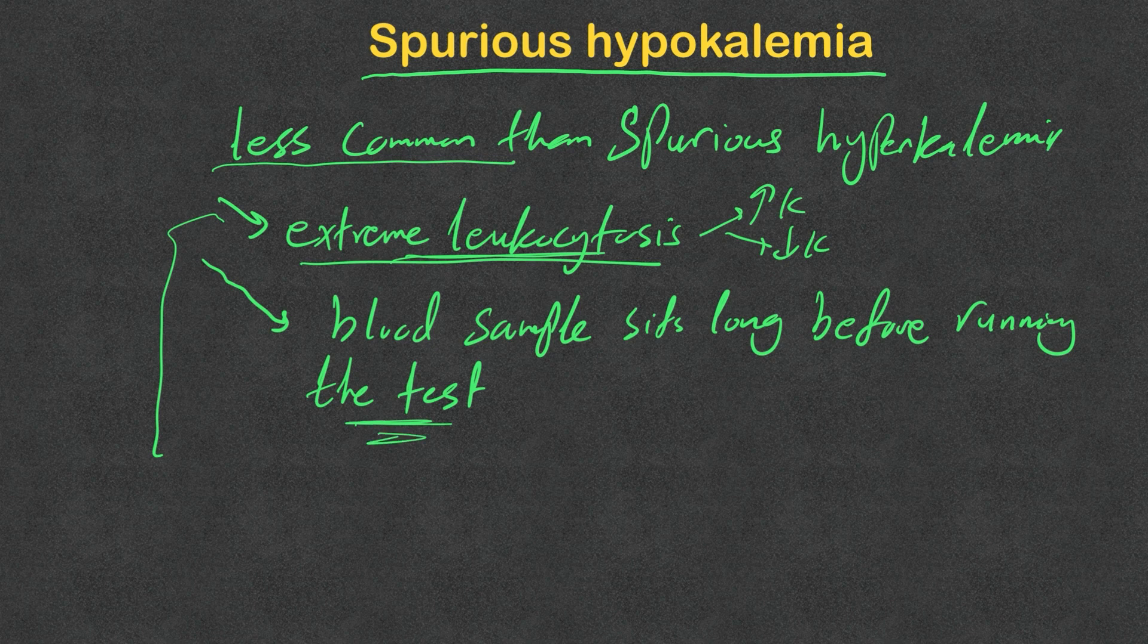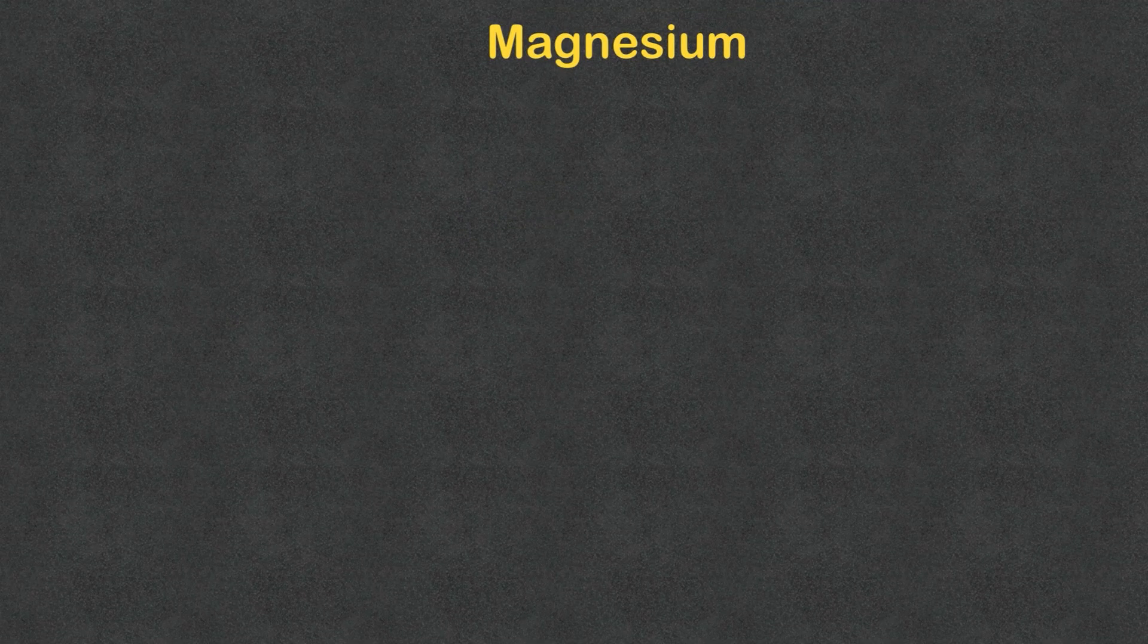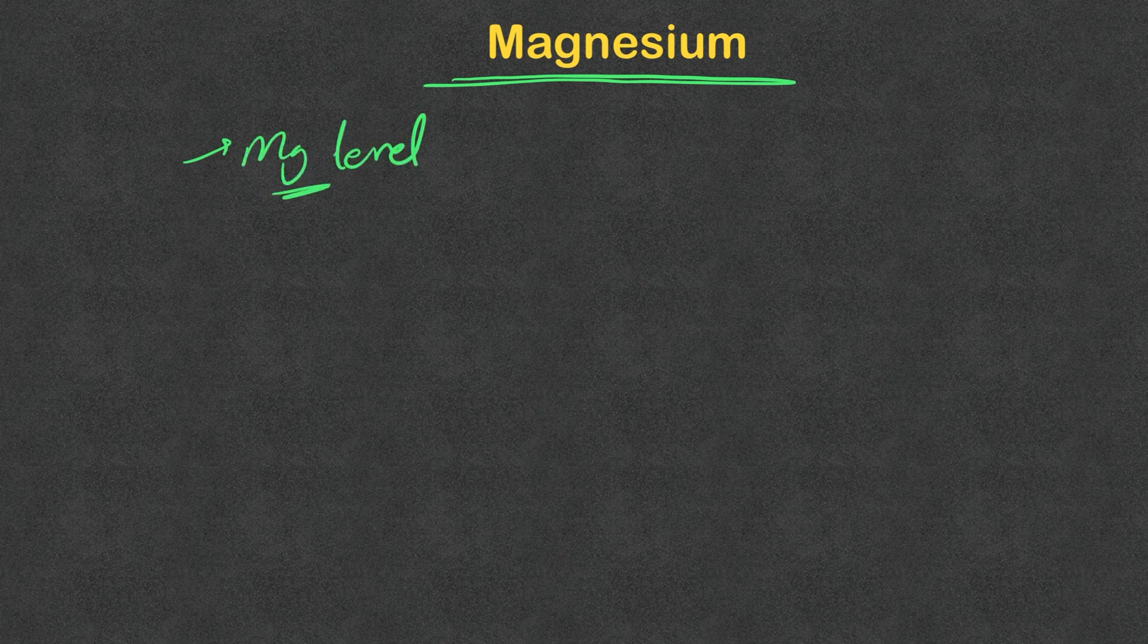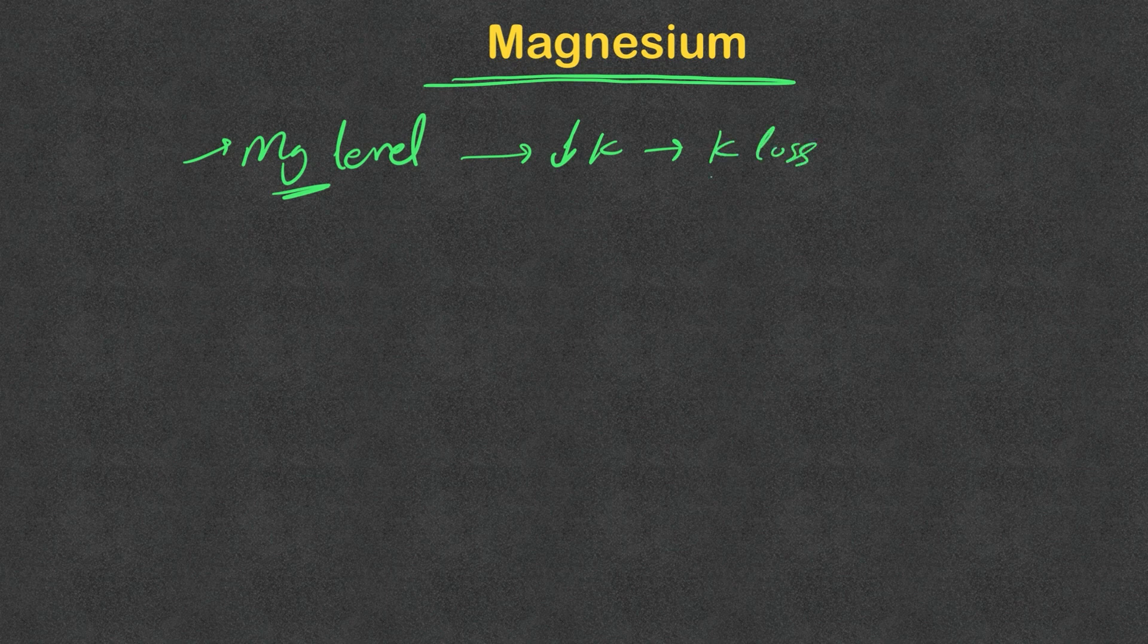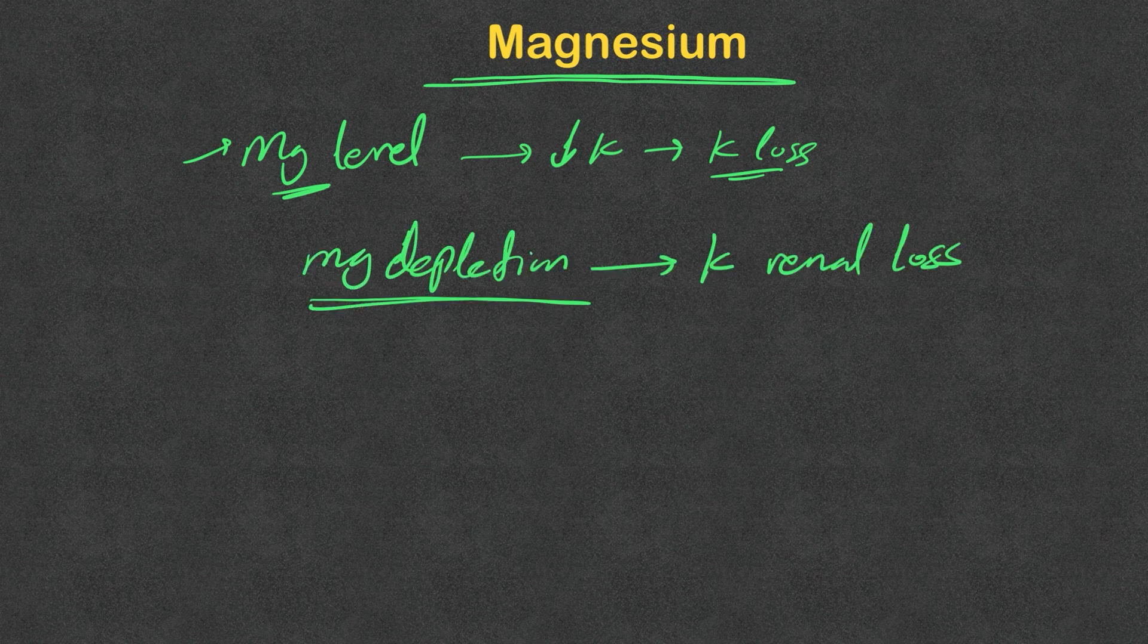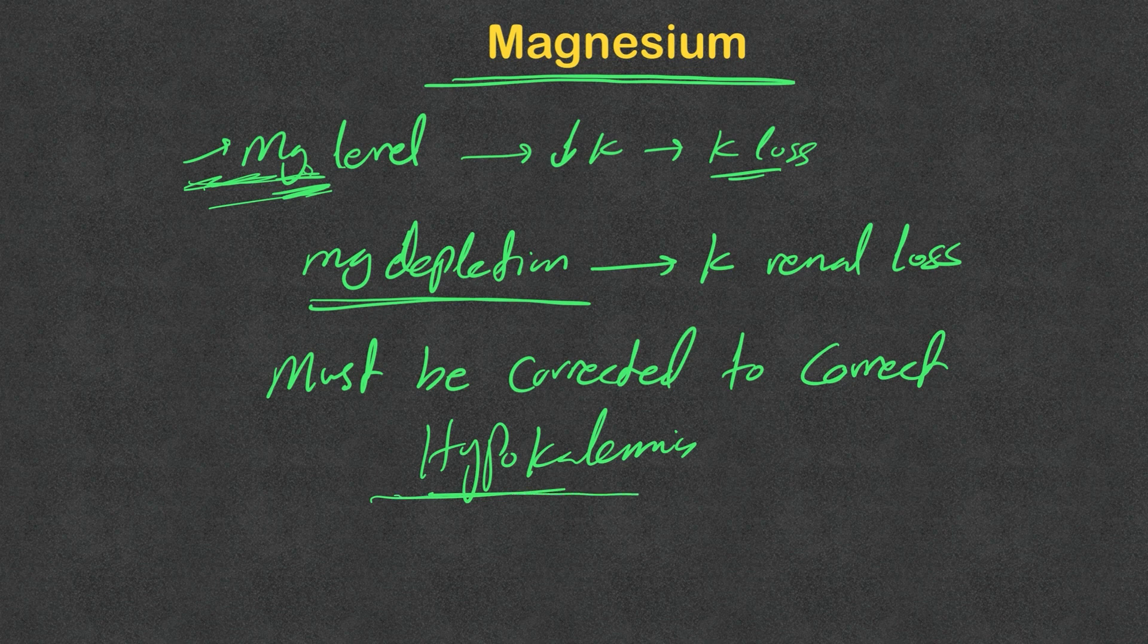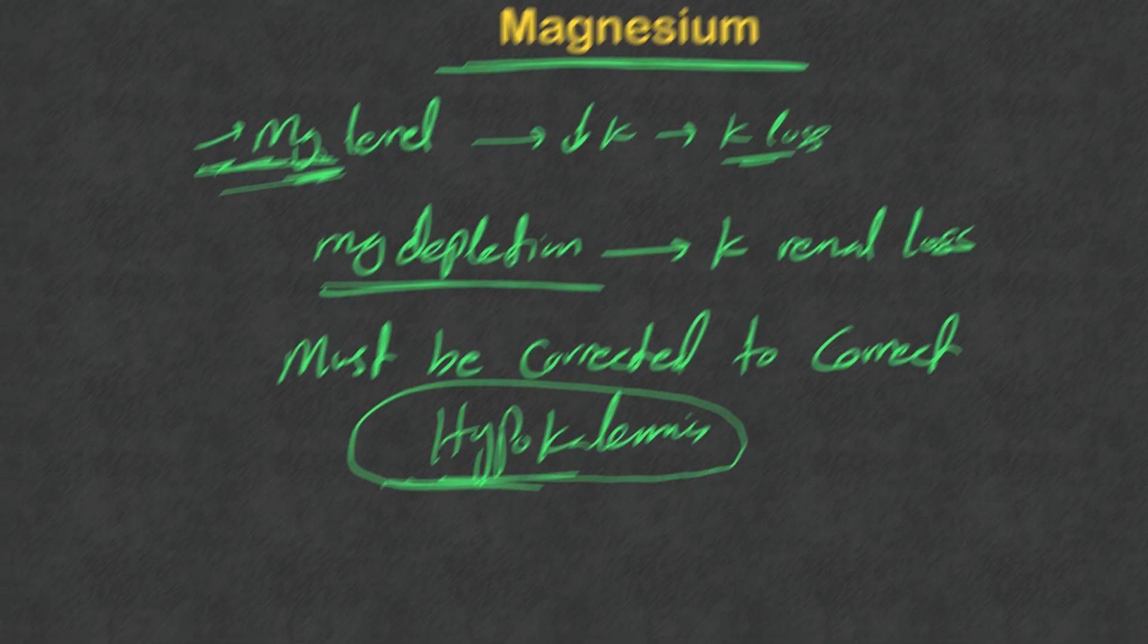Never forget about the magnesium. In any case of hypokalemia, we need to check magnesium level, and this is particularly important if the hypokalemia is related to potassium loss rather than the redistribution of potassium. Magnesium depletion leads to potassium renal loss, so magnesium must be corrected to correct hypokalemia. Never forget about checking magnesium level and repleting hypomagnesemia, otherwise it will be difficult to treat hypokalemia.